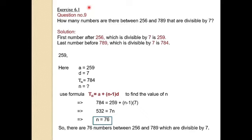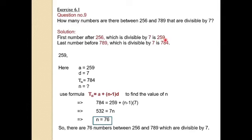To solve this question, we will use the technique of arithmetic progression. Ek progression banayenge jisme har number ke darmiyan 7 ka difference hoga. First, we need to find where the progression starts. The limit given is from 256 to 789. When you divide 256 by 7, it is not completely divisible. Checking further: 259 is the first number completely divisible by 7, because 7 times 37 is 259.